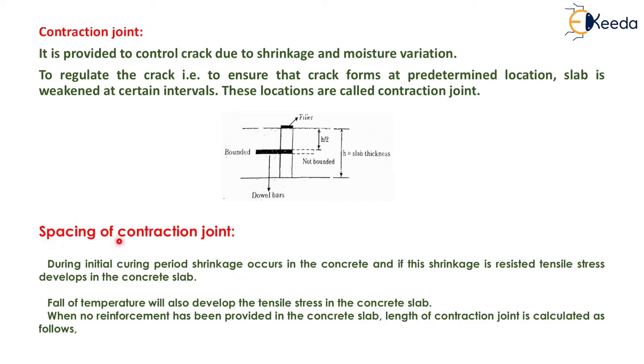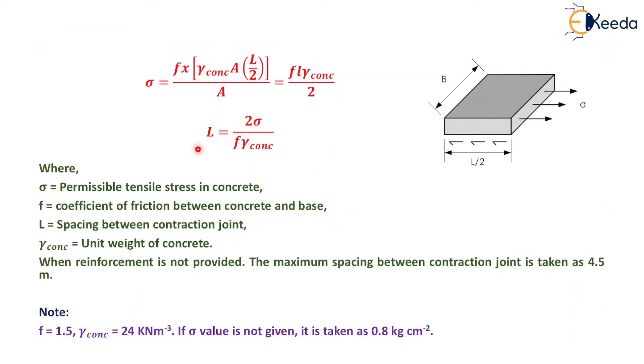Now, spacing of contraction joints. During initial curing periods, shrinkage occurs in the concrete, and if the shrinkage is resisted, tensile stress develops in the concrete slab. Fall of temperature will also develop tensile stress in the concrete slab. When no reinforcement has been provided in the concrete slab, spacing of contraction joint is calculated as L = 2σ/(f·γconcrete).